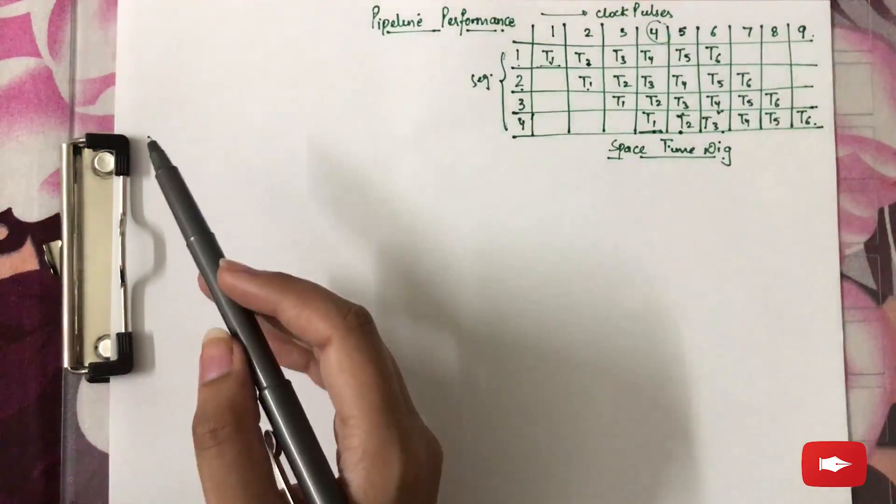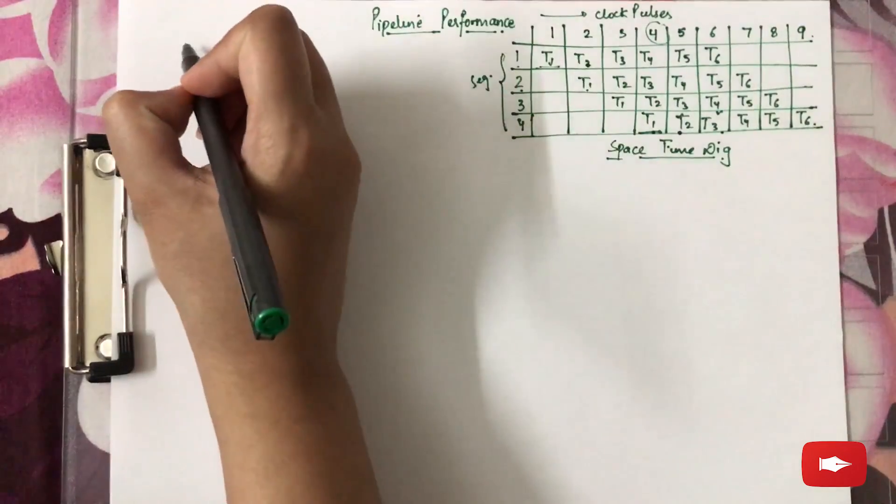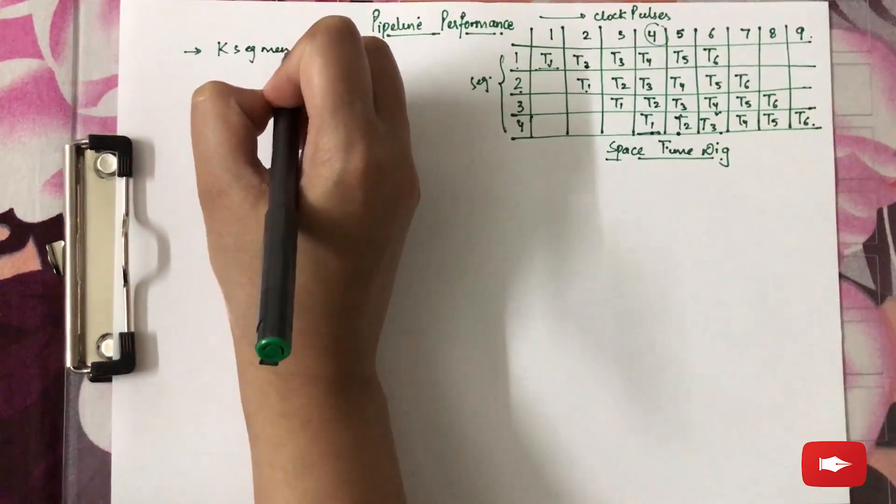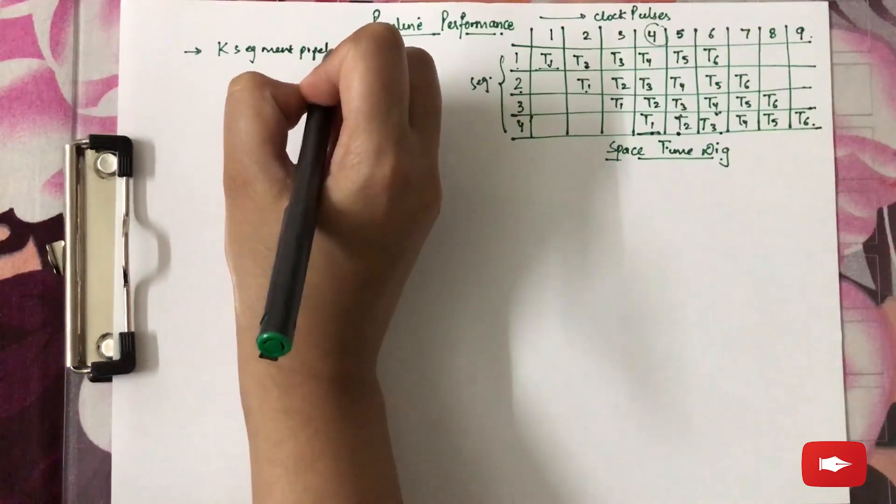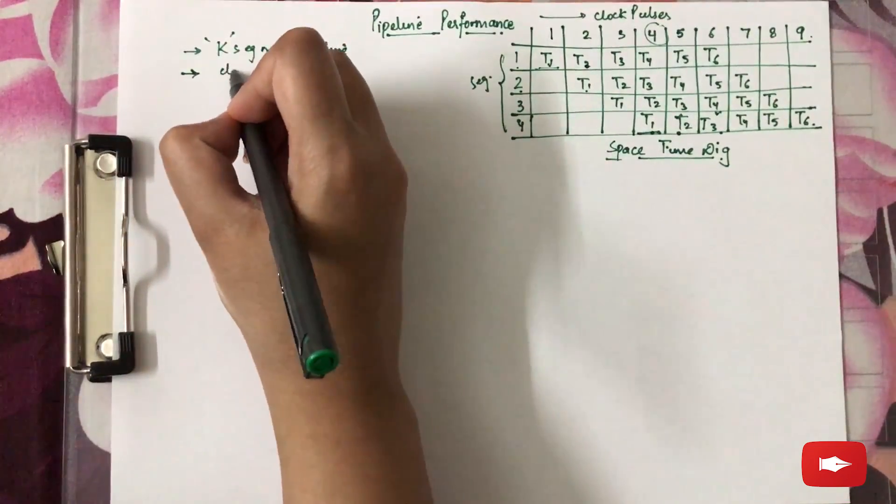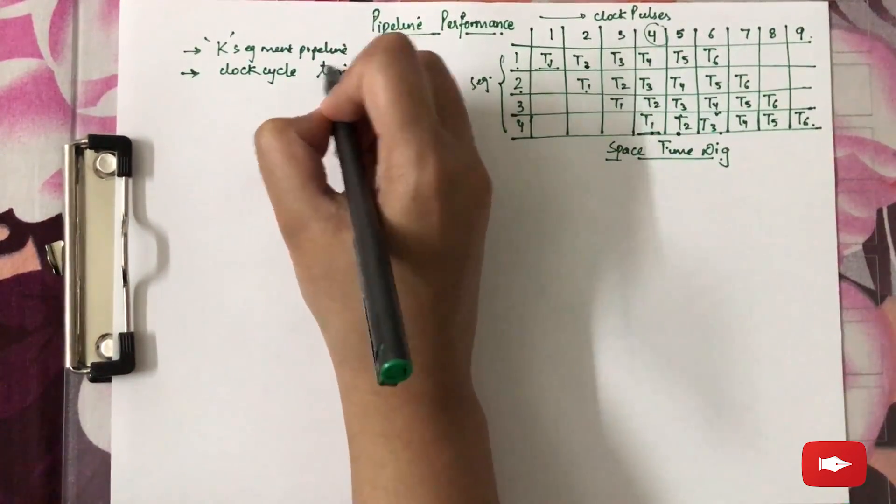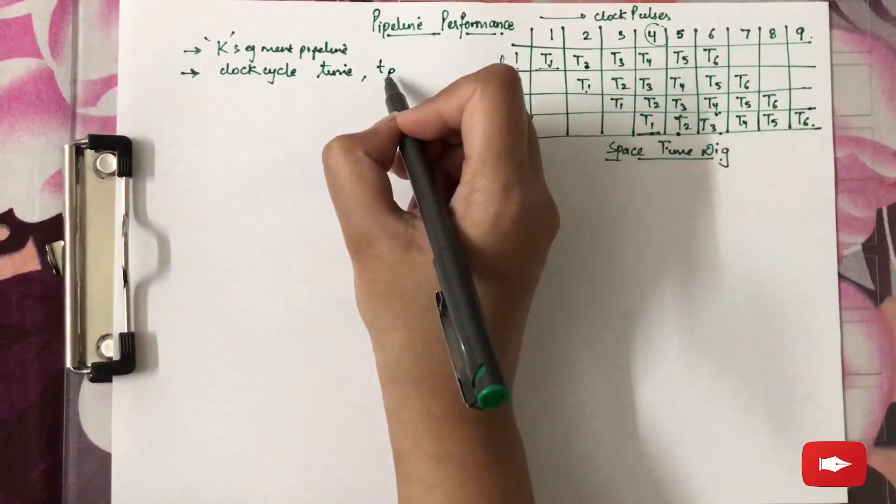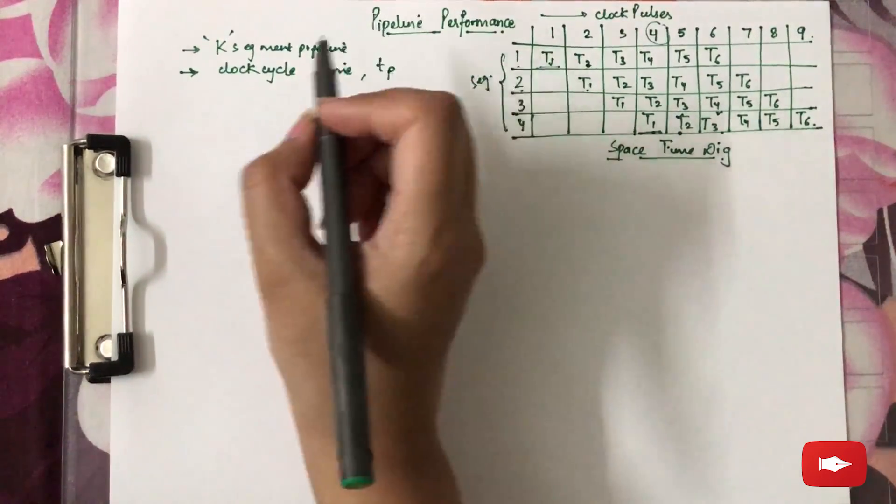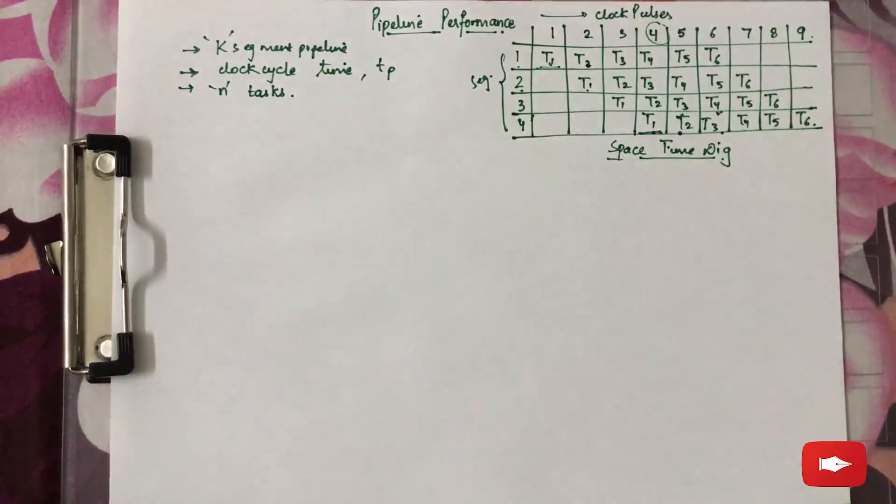Now coming to the concept of pipeline performance and generalizing the idea, let's assume that we are having a K-segment pipeline. Number of segments we are assuming to be K, clock cycle time to be denoted by TP, where P is for time in the pipelining process, and the number of tasks is N.